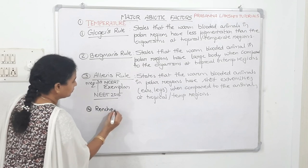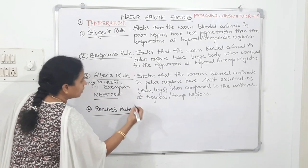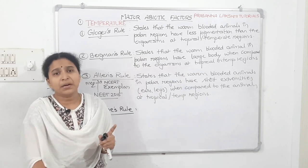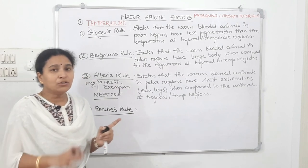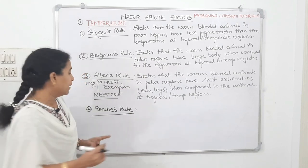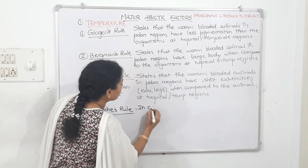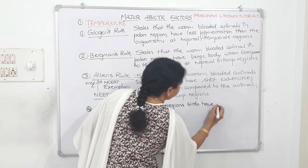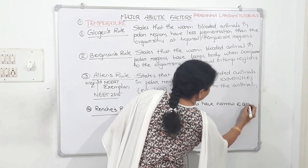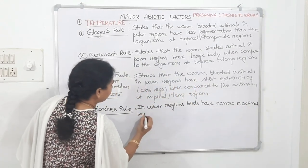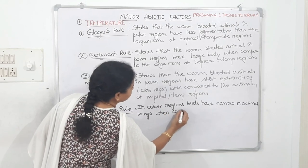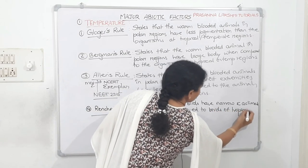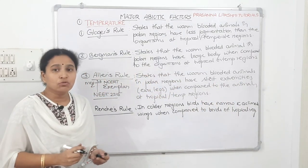Rensch's rule talks about the wing size of birds. In colder polar regions, birds have narrow and acuminate wings when compared to the birds of tropical and temperate regions, which have bigger wings.